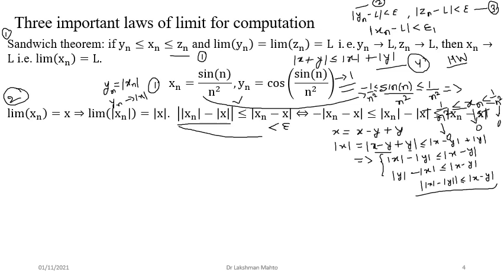From this consequence of the triangle inequality, the proof of the second theorem follows directly. Since xn converges to x, for every epsilon there exists K such that |xn − x| < epsilon, and hence ||xn| − |x|| < epsilon, meaning |xn| converges to |x|.